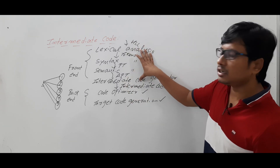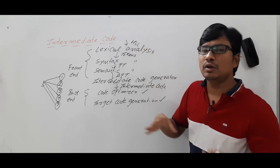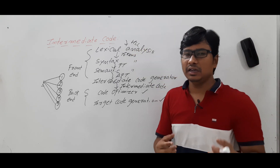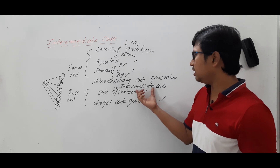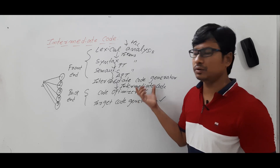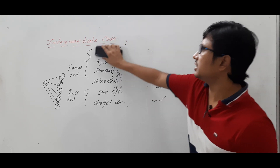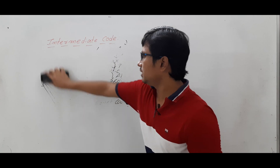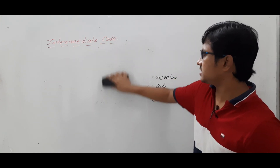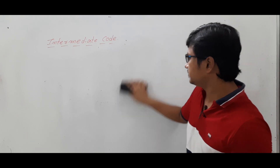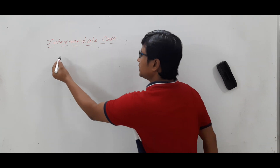Since we have the intermediate code, we are able to reuse these four front-end phases of the compiler whenever we are designing a new compiler. I hope you have understood the importance of the intermediate code. Now let me discuss how to represent the intermediate code. The intermediate code can be represented in three ways. Let me discuss each one in detail.